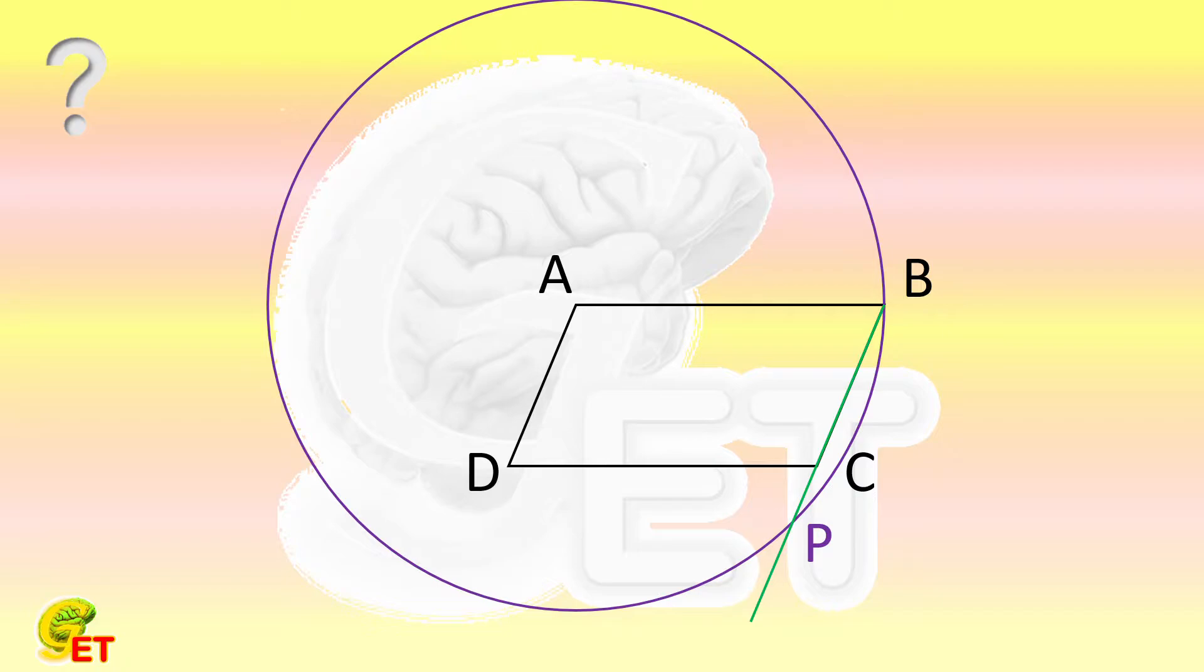Then we plot another circle with point C as the center and the length of CB as the radius. This circle and AB intersect at point Q.